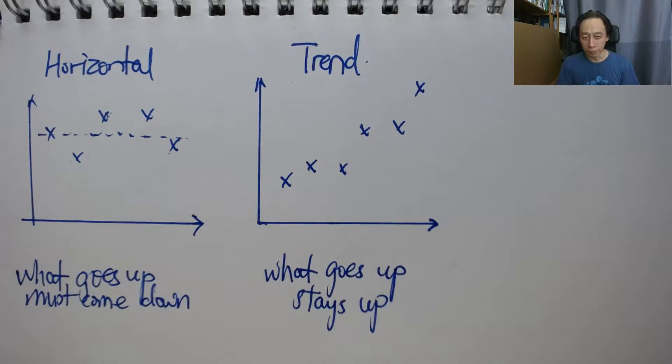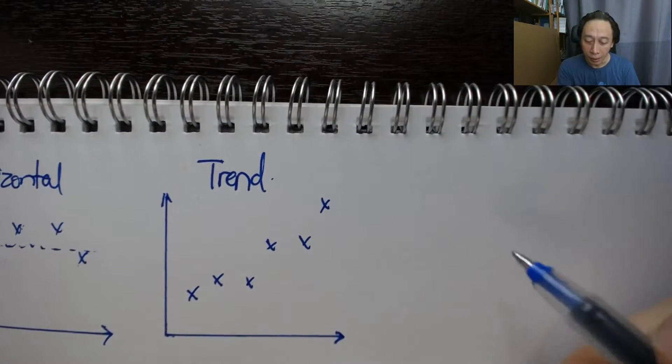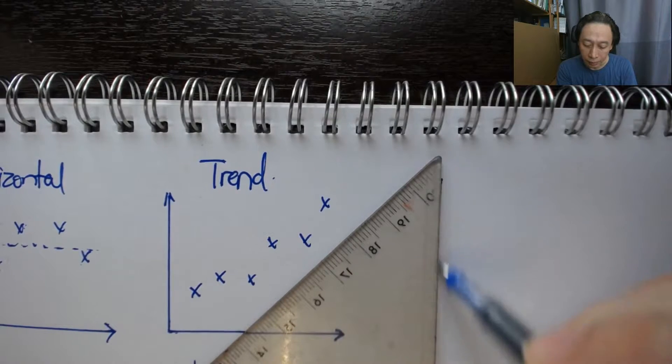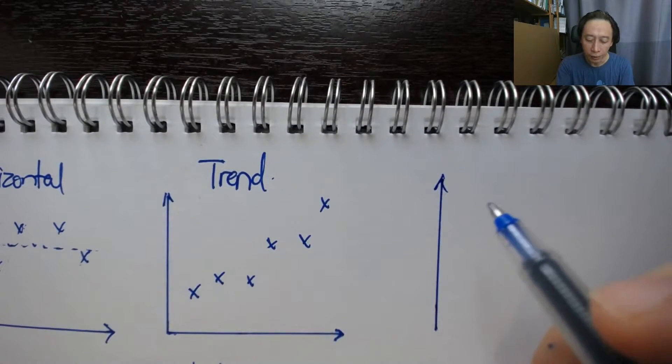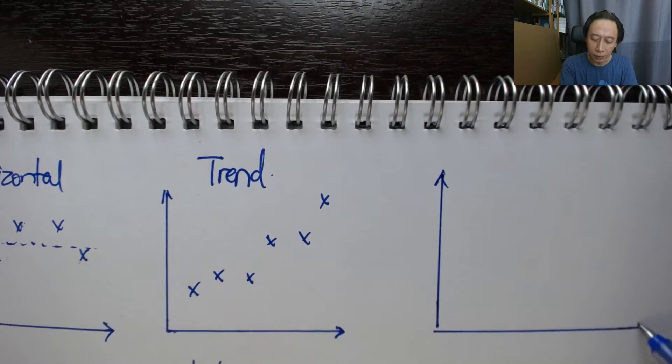Then another pattern that we can find will be seasonal and cyclical, right? They are kind of basically similar in meaning except for some fine differences.